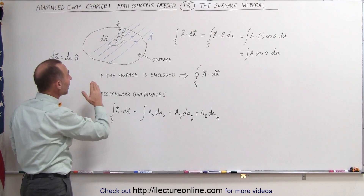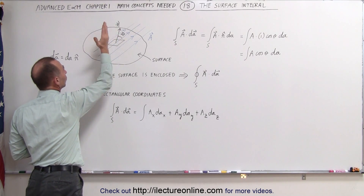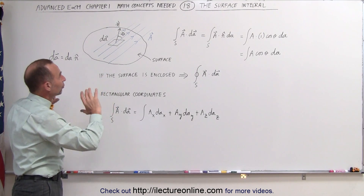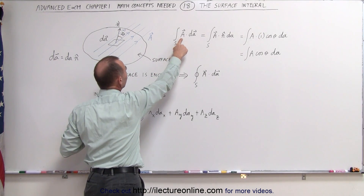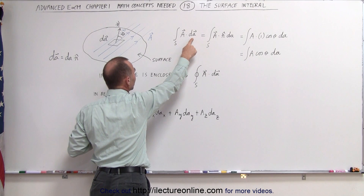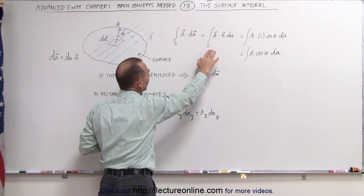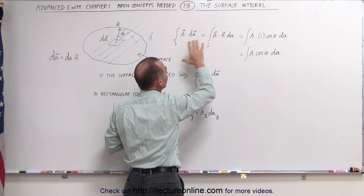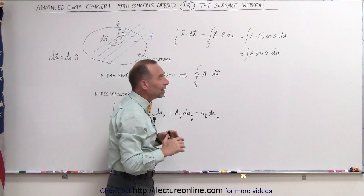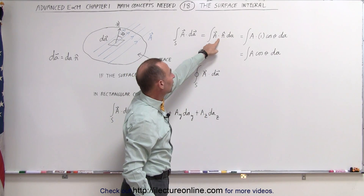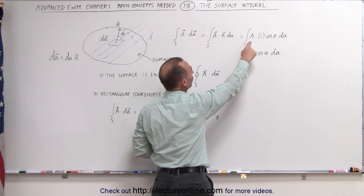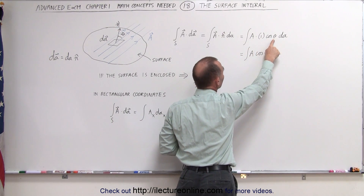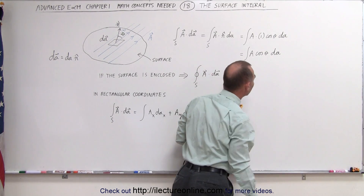Notice there will be an angle between the vector field and the normal of the surface at that moment. Let's call that angle theta. Then if you want to integrate over the surface, we're going to multiply the vector field times the area element, and that's going to be a dot product, which means this can be written as the normal vector times dA dotted with the vector field. This is a dot product, so we get the magnitude of A times the magnitude of the unit vector, which is 1, times the cosine of the angle between them times the small area element dA.